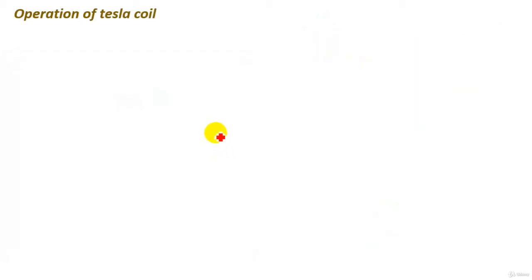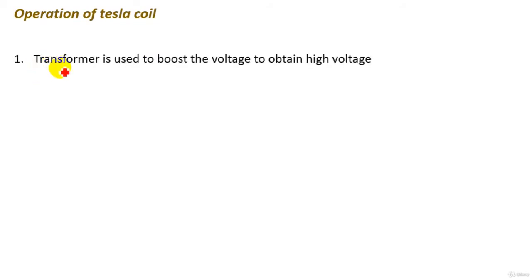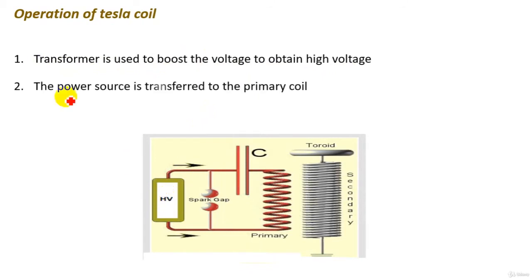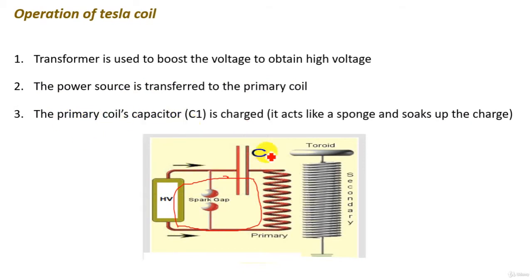In the operation of the Tesla coil, the transformer first boosts the voltage to obtain high voltage, and power is transferred to the primary coil. The primary coil's capacitor C1 is charged — it acts like a sponge soaking up charge. As C1 charges, the voltage across the spark gap increases.